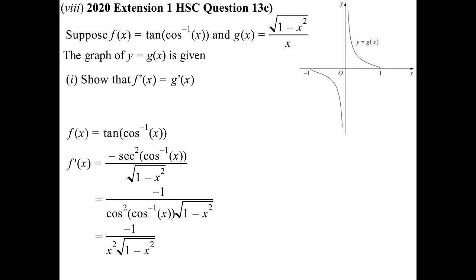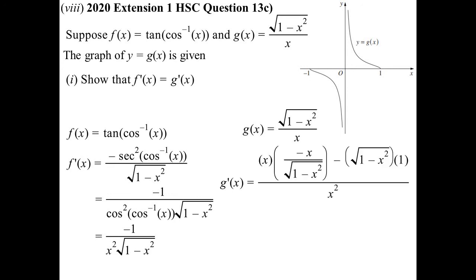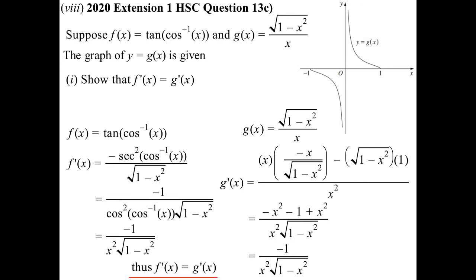Now working on g(x) = √(1 − x²) / x using the quotient rule: square the bottom, write down the bottom, diff the top, minus, write down the top, diff the bottom. Sending the square root to the bottom of the fraction, the first term becomes minus x squared and the second term becomes minus all of (1 minus x squared), which is minus 1 plus x squared. The x squared cancels, and we get the same result. So their derivatives are the same — which is what we were trying to show.